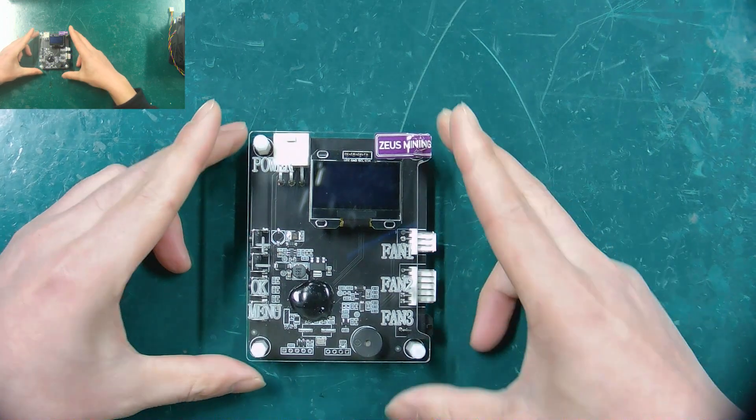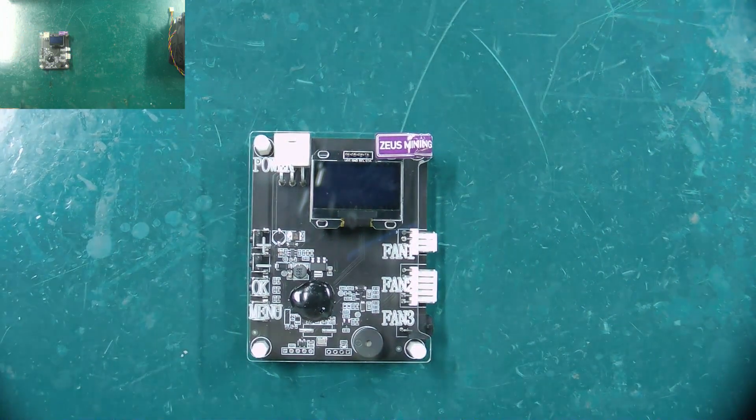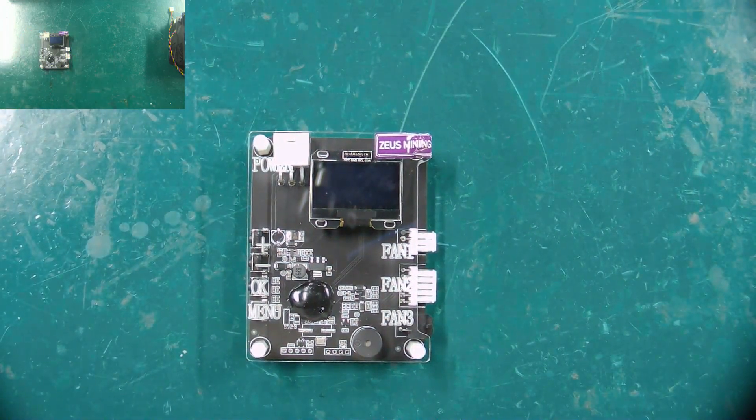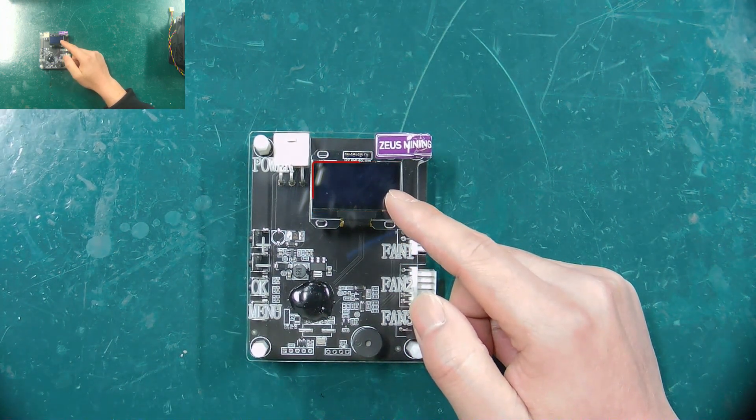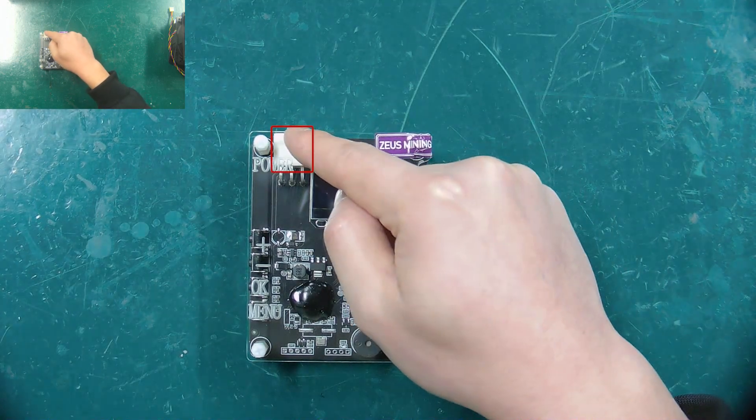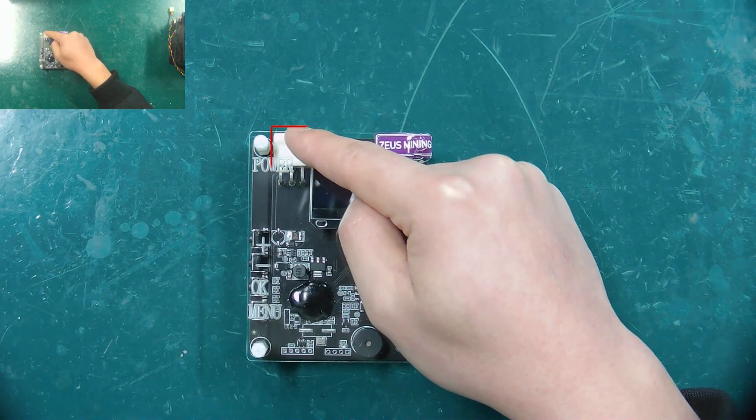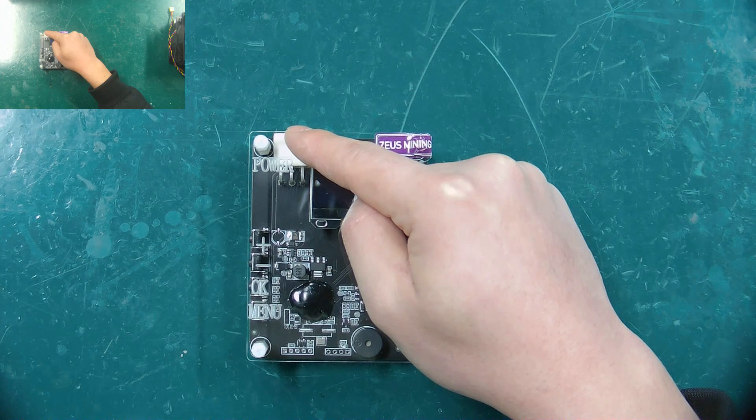Next, I will introduce the interface and buttons of the F1 fan tester in detail. This is the display screen for showing the test results. DC 12 volts powering interface, its input voltage is 12 volts.